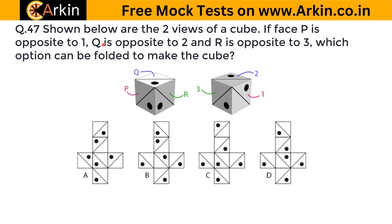Shown below are the two views of a cube. Face P is opposite to 1, face Q is opposite to 2, and R is opposite to 3. Which option can be folded to make the cube?